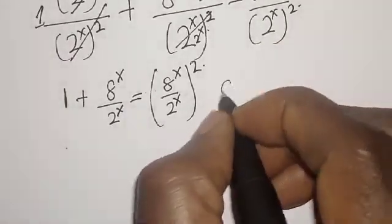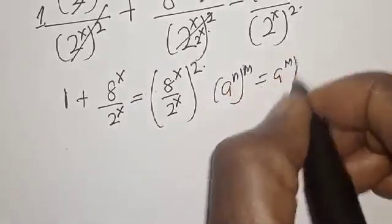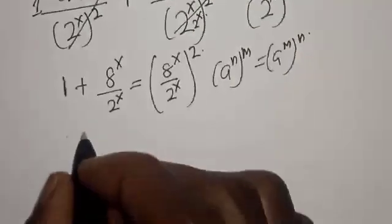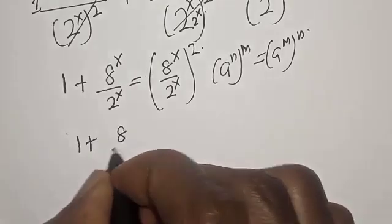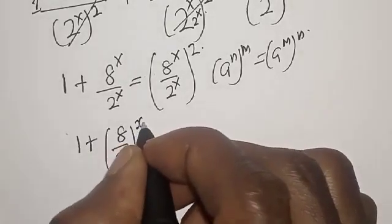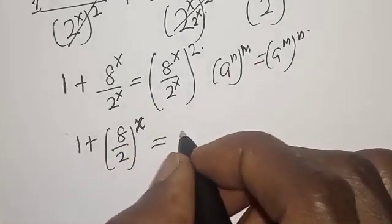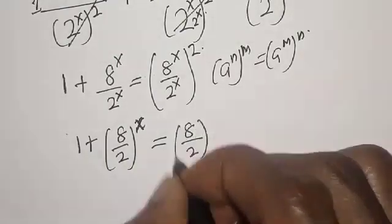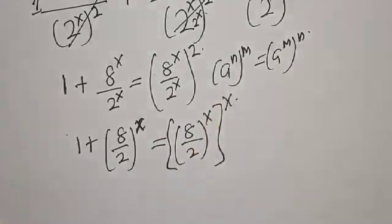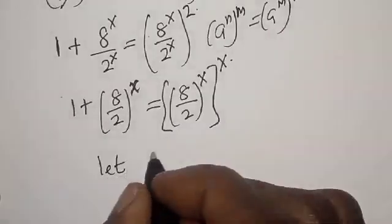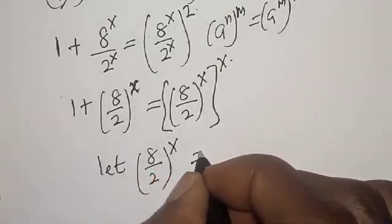Remember that a raised to power m raised to power n simplifies. Now we have 1 plus 8 over 2, all raised to power s, is equal to 8 over 2, all raised to power s, squared. Let 8 over 2, all raised to power s, equal y.